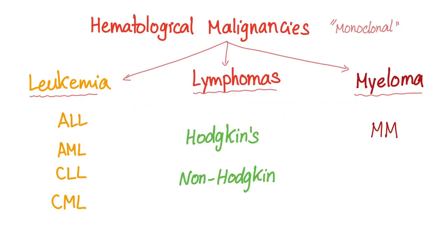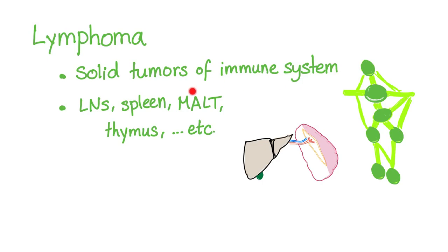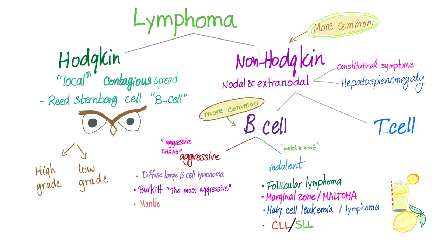Hematological malignancies are leukemias, lymphomas, and myeloma. Lymphoma is a solid tumor of the immune system — not only the lymph node, but spleen, mucosa, socio-lymphatic tissues, thymus, etc. Lymphoma used to be classified as Hodgkin's and non-Hodgkin's; now the new classification has three subtypes: Hodgkin's, B-cell, and T-cell.